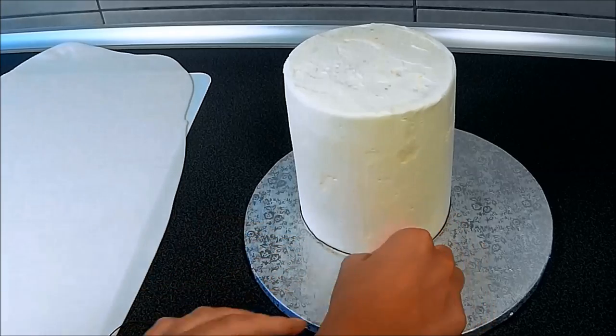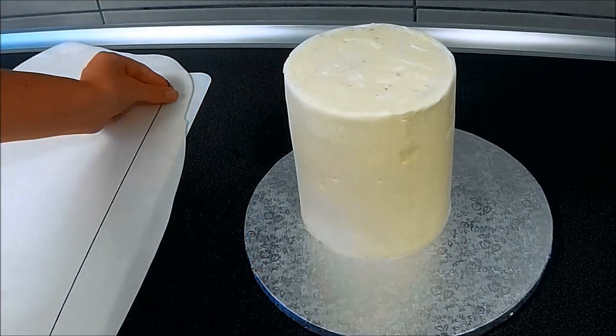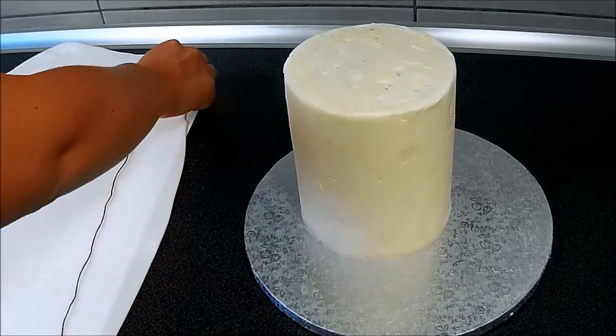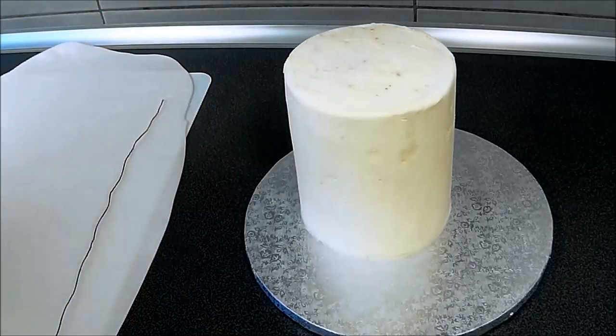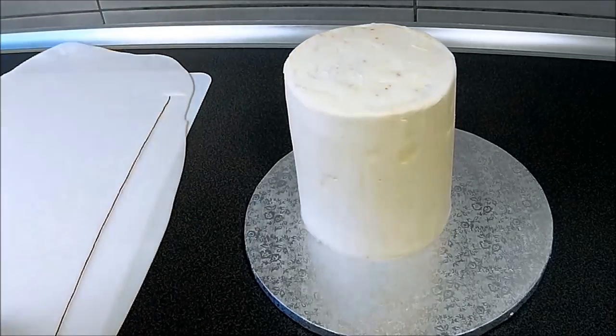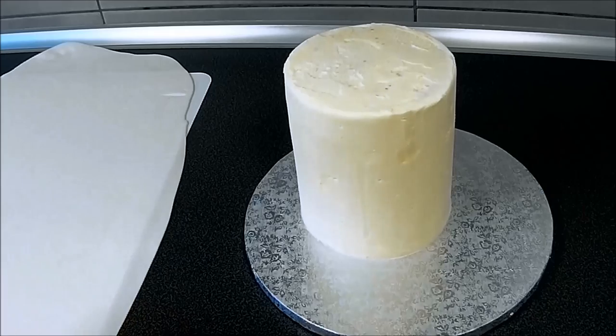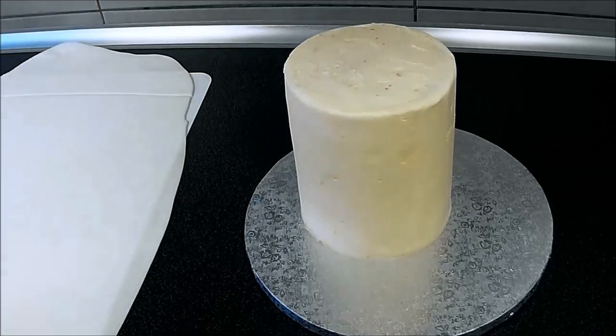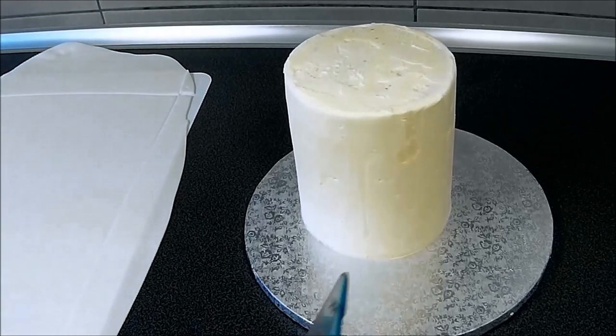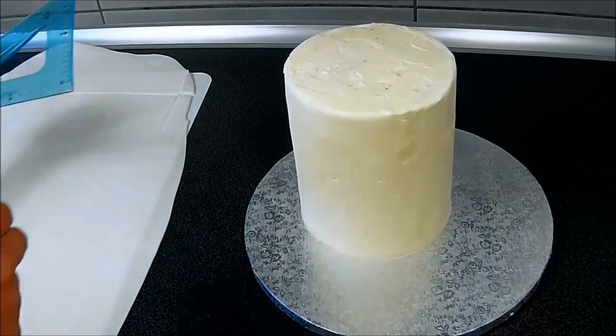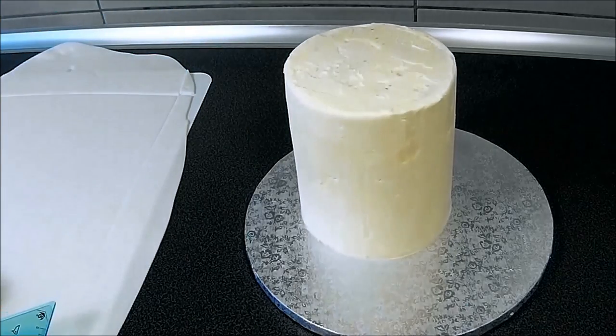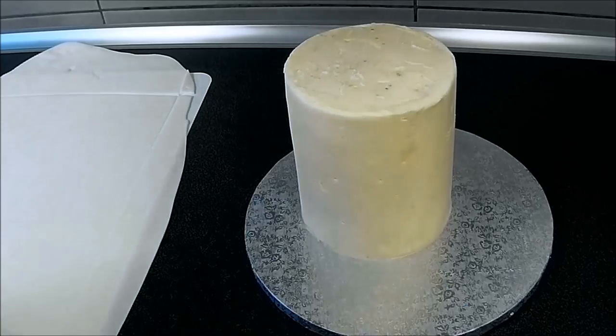Now I'm using a thread to check the circumference of the cake, and I'm going to measure a little bit more than that on a piece of white fondant. I'm cutting it straight on one side, and now I'm checking the height of the cake. I'm going to mark a little bit more than that on my fondant and cut a straight line over there.